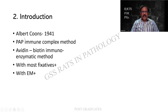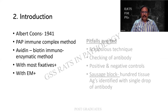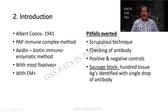The history behind this is Albert Combs in 1941 introduced the peroxidase-antiperoxidase immune complex method. The avidin-biotin technique was also found out later. This is compatible with most of the fixatives and can be used for electron microscopy as well. The pitfalls that have to be averted include: please understand that it is a scrupulous technique. Checking of the antibody is needed - it should not be outdated. Positive and negative controls must always be used. And a sausage block, wherein a hundred tissue antigens can be identified at a single drop of antibody, is also available nowadays.